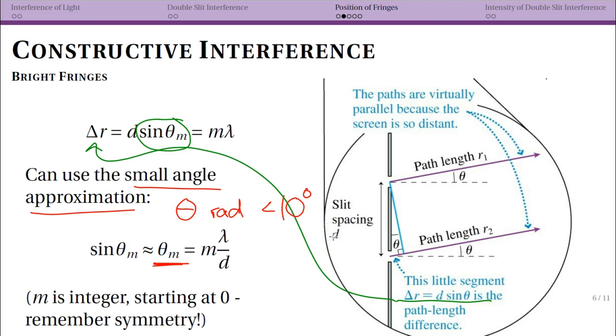Now we have an equation that relates our angle to lambda over d with this integer showing that there are different spots where you're going to have bright patterns versus your dark fringes. This is important. This is a good equation to understand. And again, this is going to be for our bright fringes. We're going to have a different equation later for the location of our dark fringes.